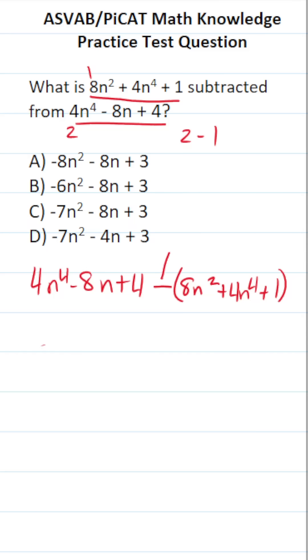That is to say, we've got to take this negative sign and distribute it here, here, and here. So let's go ahead and do that. This becomes 4n to the fourth minus 8n plus 4. Negative times positive 8n squared is negative 8n squared. Negative times positive 4n to the fourth becomes negative 4n to the fourth. And negative times positive 1 is negative 1.